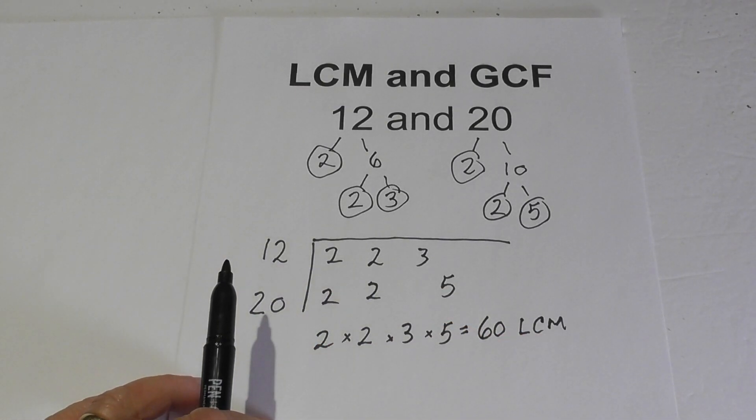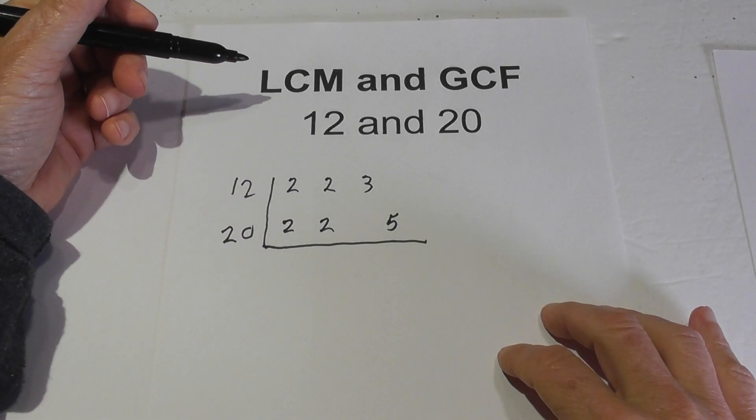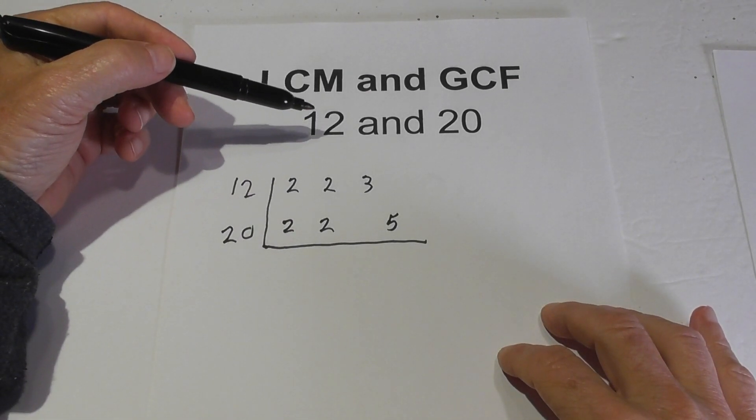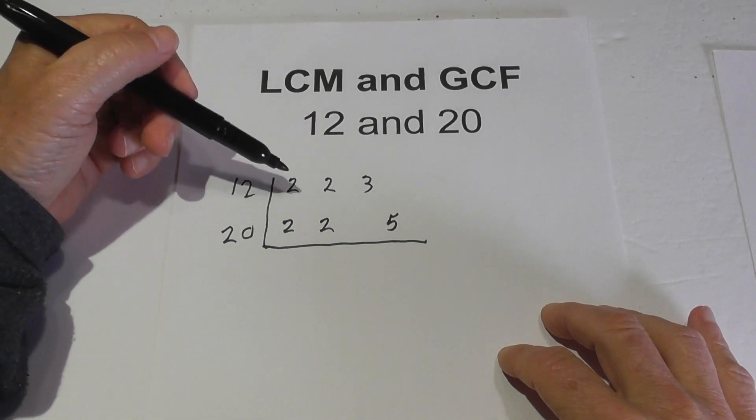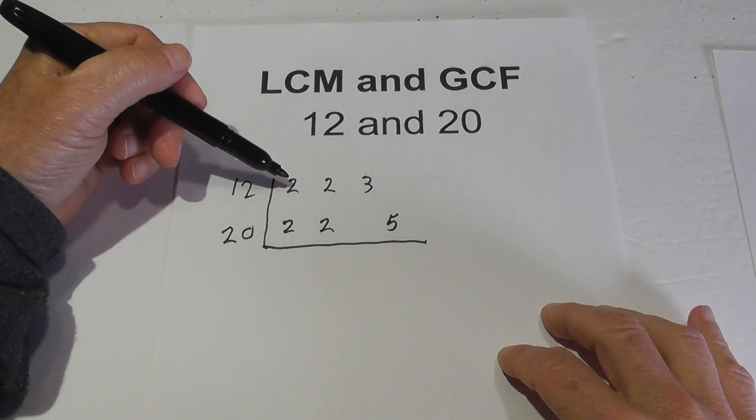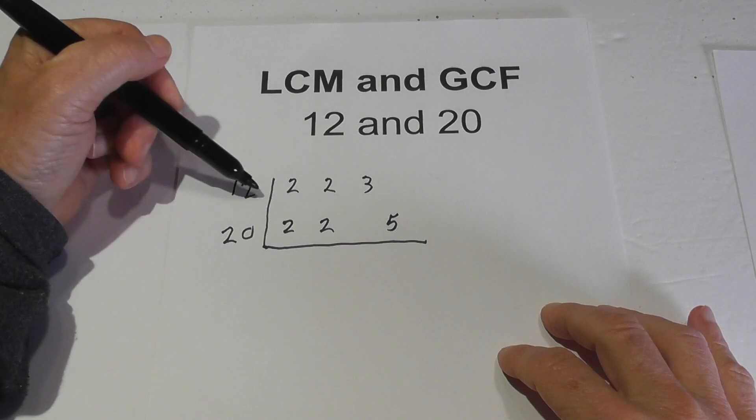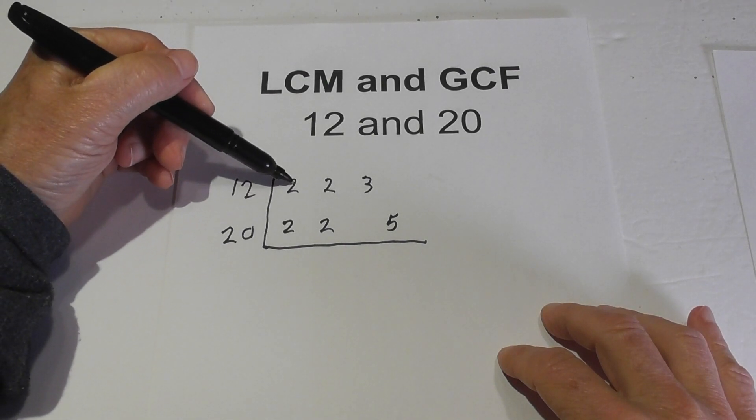Okay, I have just rewritten the chart. And now for the greatest common factor, the rule is, using the same chart, in order to bring down the number you must have two in the column. You must have pairs because you're looking for common numbers.